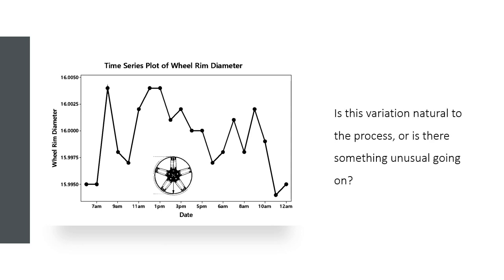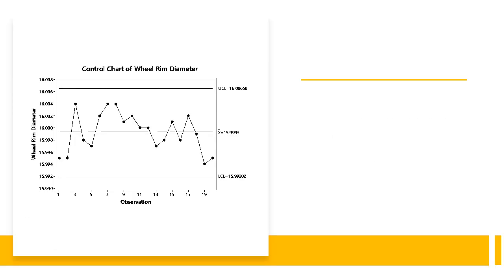So is this variation natural to the process, or is there something unusual going on? We can answer this question by expanding on the time series plot to create a control chart. As its name suggests, a control chart is used to determine if a process is in statistical control—that is, the process is stable and does not exhibit unpredictable variation over time.